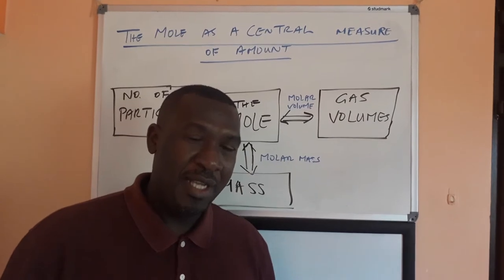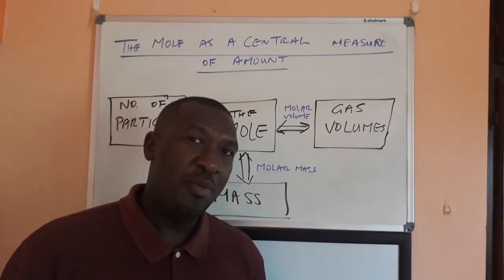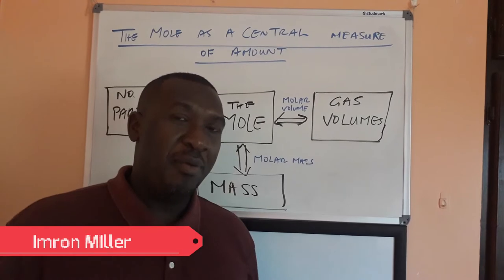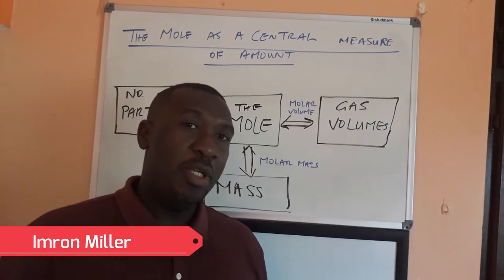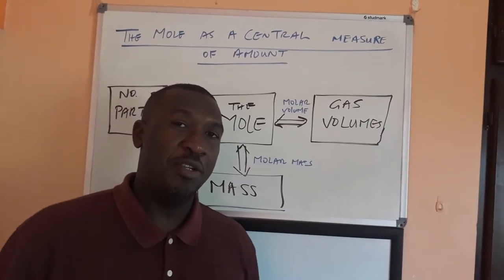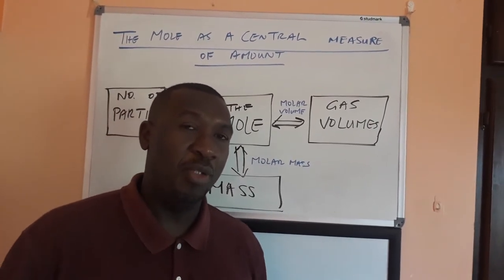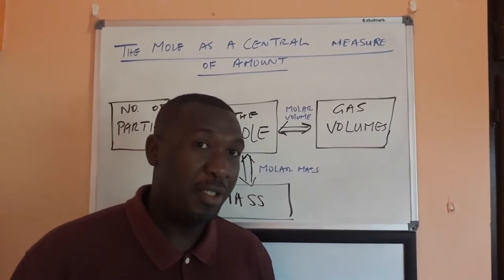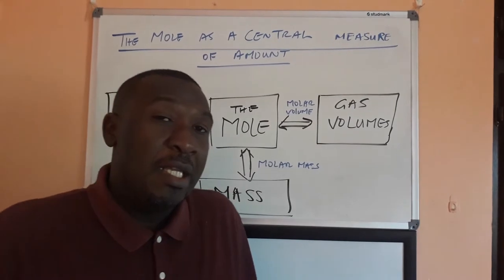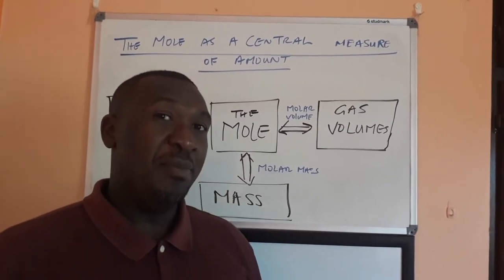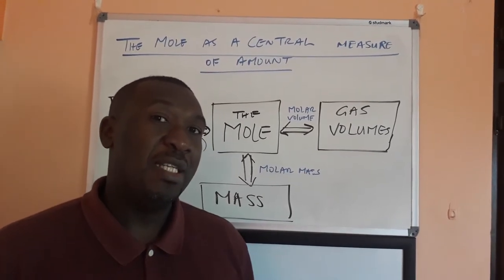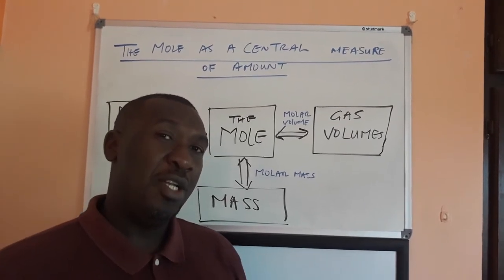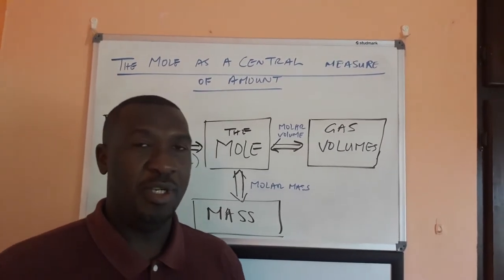Welcome again to ChemCracker. Today we're summarizing what we've done so far in the mole. The mole is just a way of measuring amount of substance — it does this by counting particles. The mole is important to chemists because it is a central way of measuring amount, and it can be related to the other ways of measuring a mole.